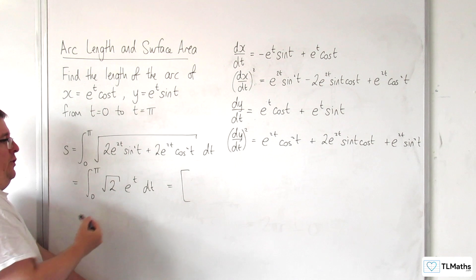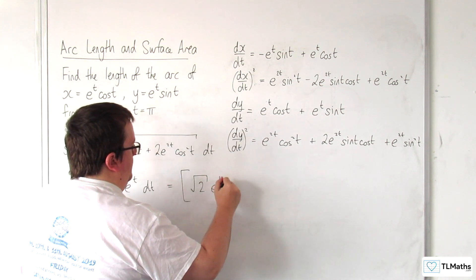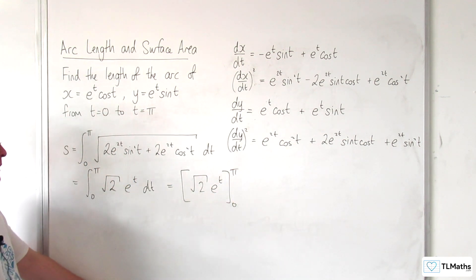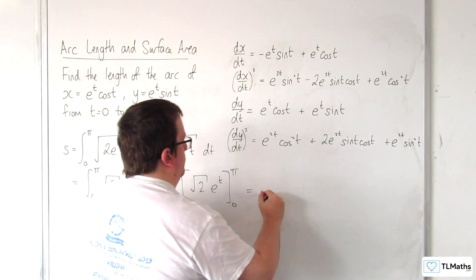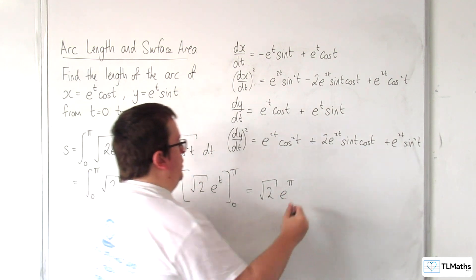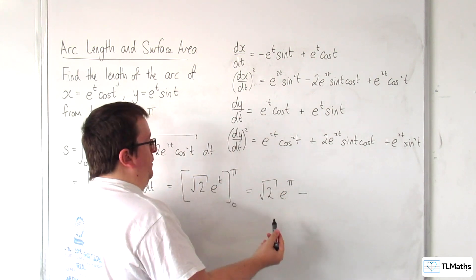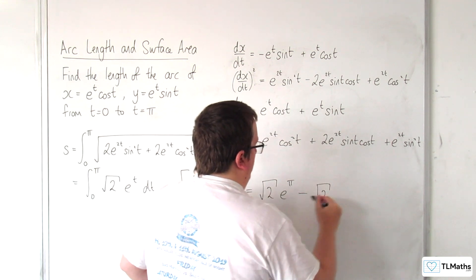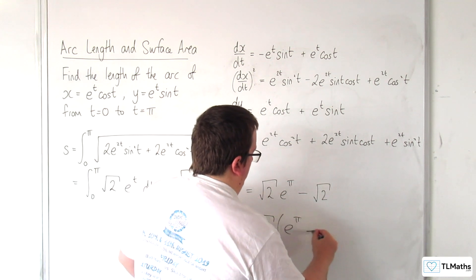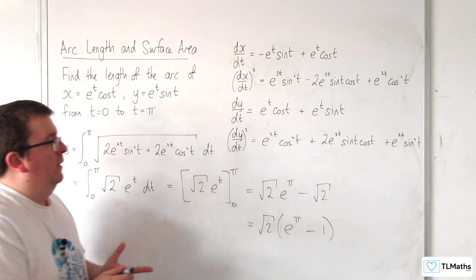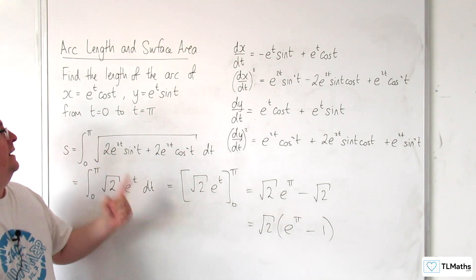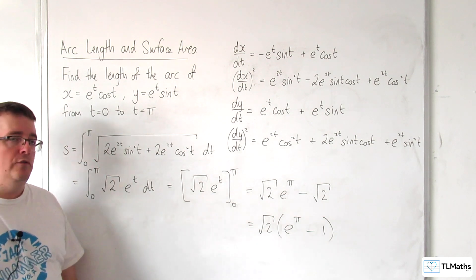Root 2 times e to the t integrates to root 2 times e to the t, evaluated between 0 and pi. Substituting pi gives root 2 times e to the pi; substituting 0 gives take away root 2 times 1. So the answer is root 2 times (e to the pi minus 1), which is the exact value of the arc length of this curve from t equals 0 to t equals pi.